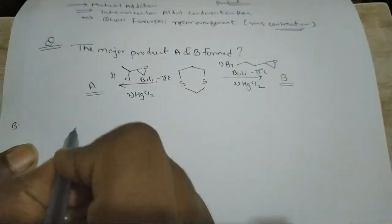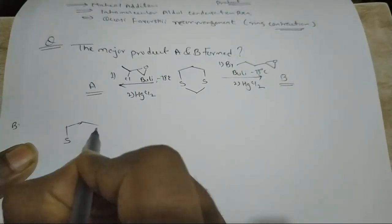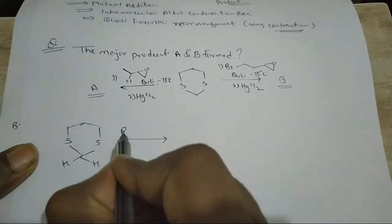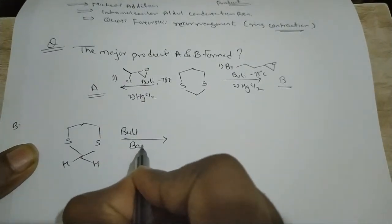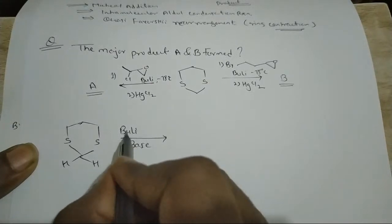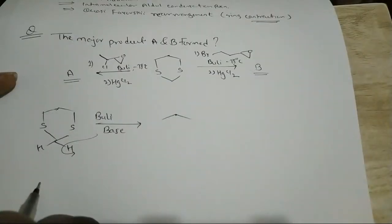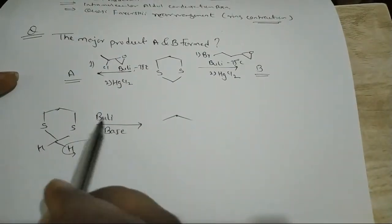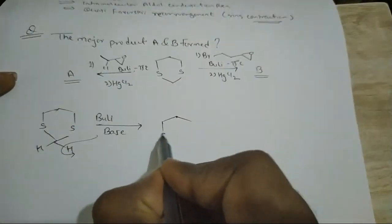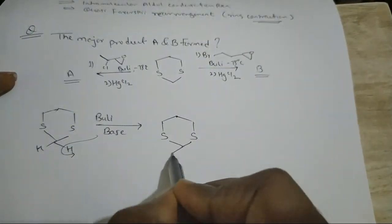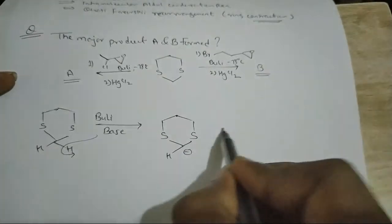For A, we have a dithiane. It is first treated with n-butyllithium, which is a base, so it abstracts the H⁺. The base abstracts the H⁺ and we get a carbanion (negative charge) here.